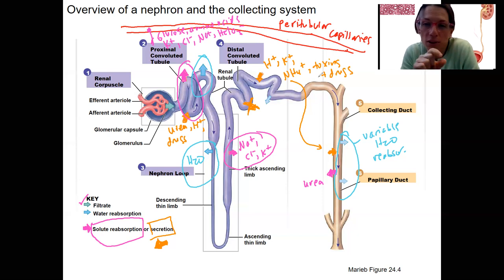Next week, we're going to go through this in order. So PCT, nephron loop, DCT, collecting duct. But this is a nice overview of what we're going to see in the different sections of the nephron and collecting duct system.